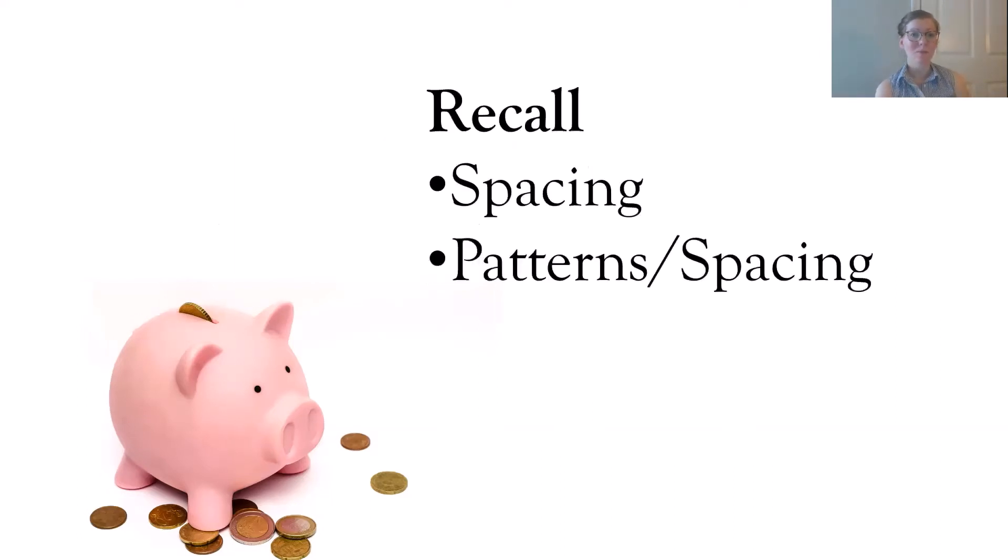So recall. There are two main strategies for promoting recall. One of them is spacing. Effectively, this is kind of like the matrix. There is no spoon, then the spoon. What I'm going to say next, that is to say that in order to remember something, you have to forget it and then remember it again and then forget it and then remember it again and then forget it and remember it again. What you're doing each time is strengthening those channels in your brain that convey that information.